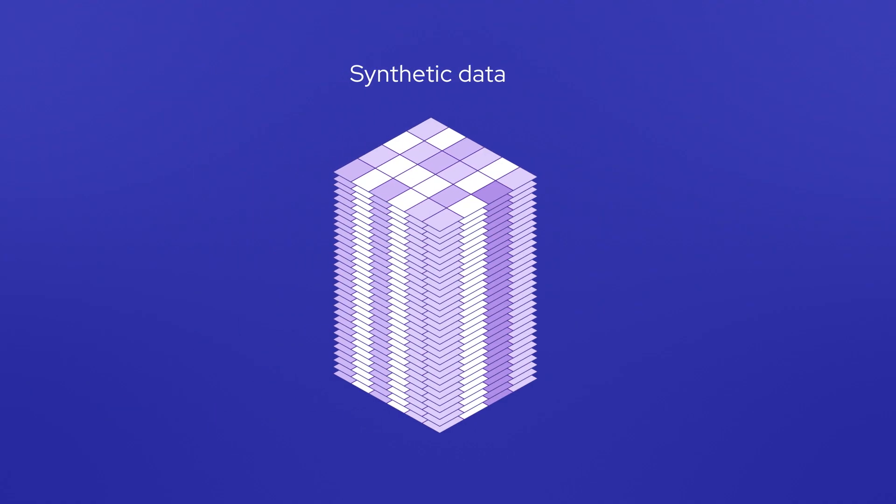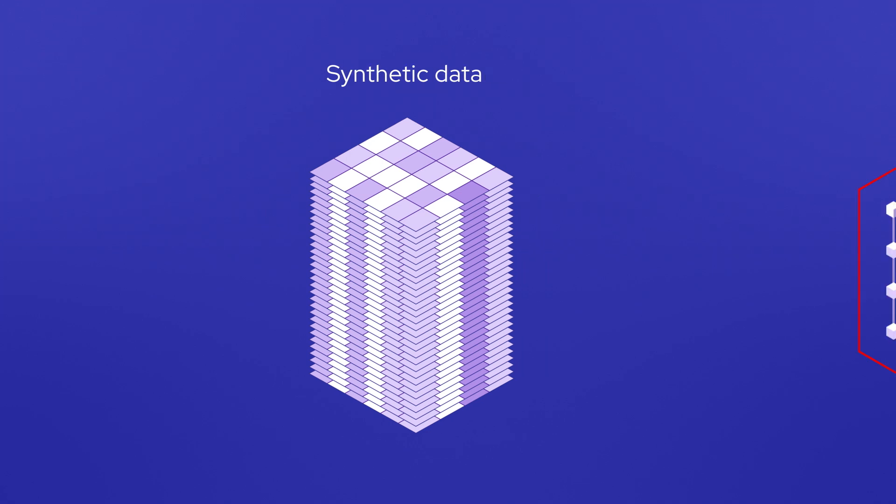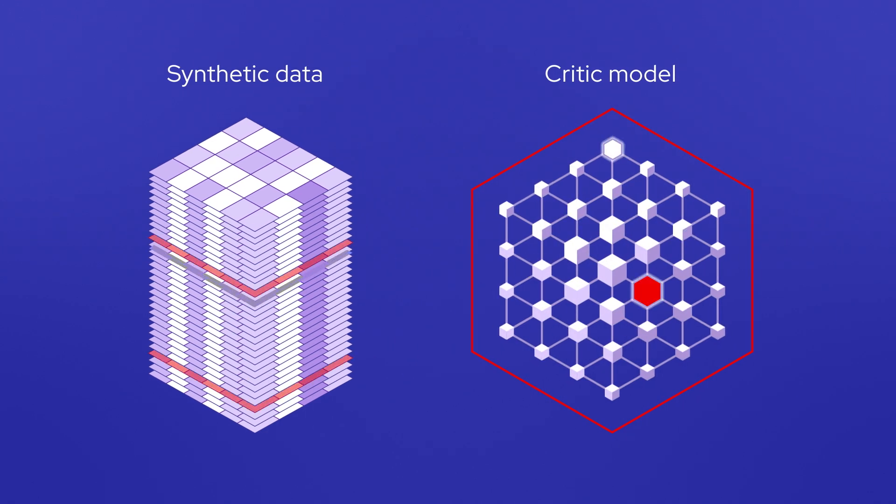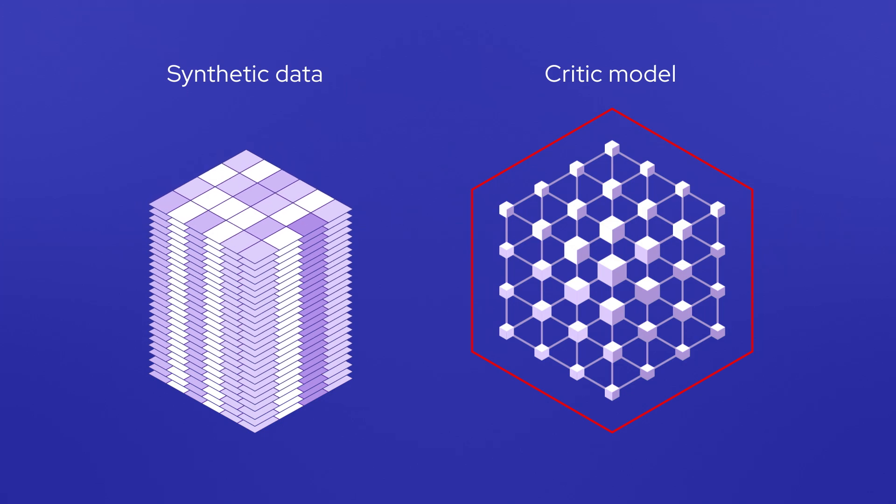Once we have a synthetic dataset, we can use what's called a critic model, which looks at all the synthetic data that was generated and assesses whether it's correct. It can go through step-by-step with each set of jokes, poetry, or whatever was generated and try to assess the quality — for example, catching cases where the generated jokes really aren't funny or don't make sense.